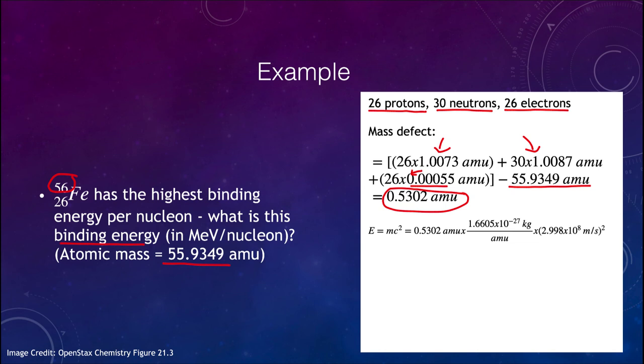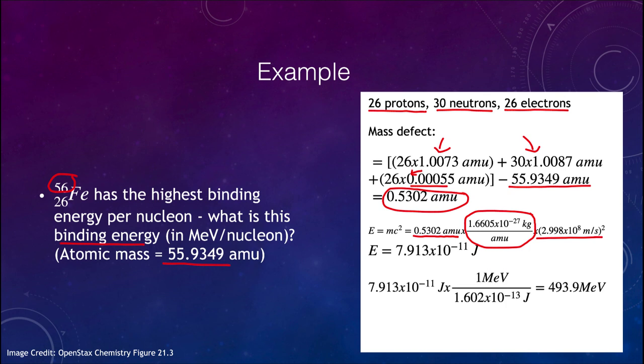Now we can figure out how much energy this corresponds to, because we take that 0.5302 atomic mass units, convert it into kilograms—this is just the conversion of atomic mass units to kilograms—and we multiply it by the speed of light squared. When we do that, we find that energy of 7.913 times 10 to the negative 11th joules. And if we convert that into electron volts, or in this case millions of electron volts, we multiply that by the conversion factor here, and we would find 493.9 million electron volts is the mass defect, the amount of energy there, the binding energy per nucleon within iron.